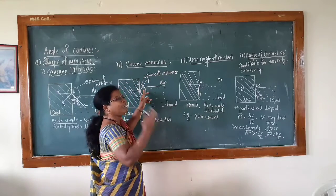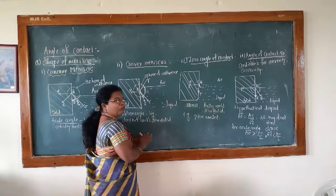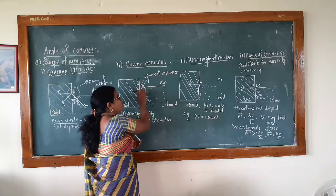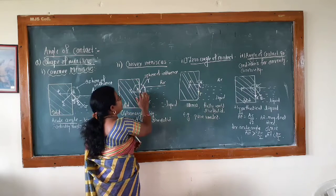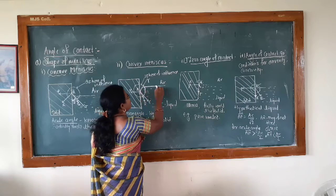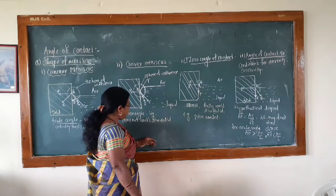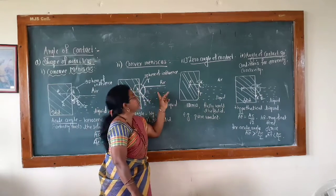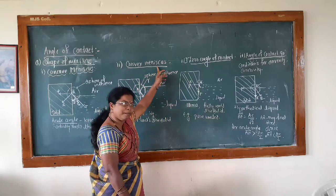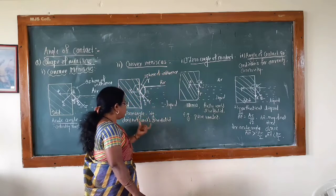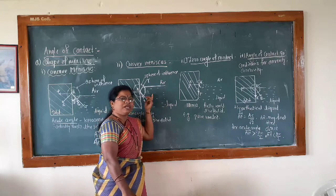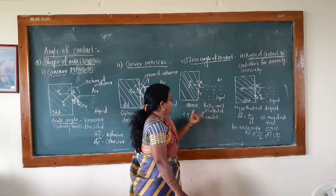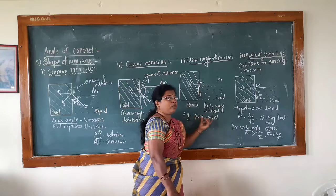For equilibrium, the molecules at this point fall downward. The molecules go towards the downside. Therefore, there is the formation of a convex surface, and so there becomes a convex meniscus. In this case, the liquid does not wet the solid.